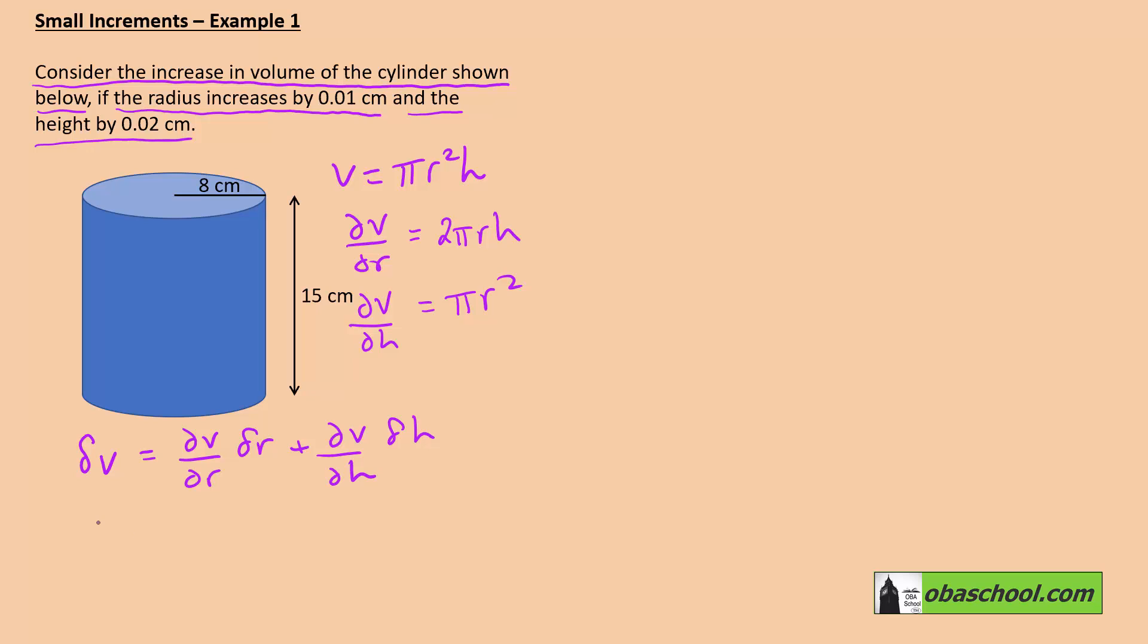So what we're saying by the increments formula is that delta V is going to be 2 pi r h delta r plus pi r squared delta h.